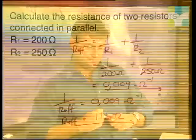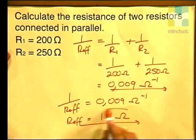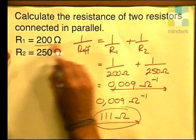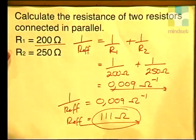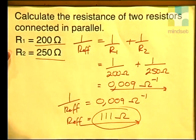It is interesting to note that the effective resistance of a parallel combination is less than either of the two resistances of the resistors in parallel. The effective resistance of 111 ohms is less than the 200 ohms of R1 and the 250 ohms of R2.